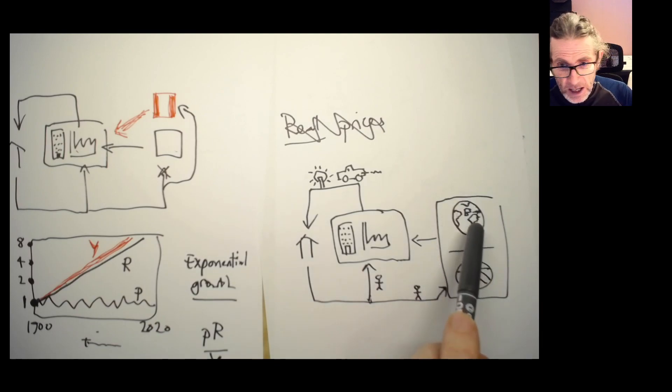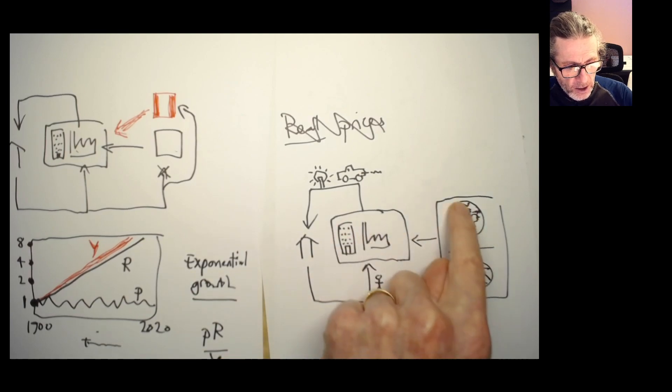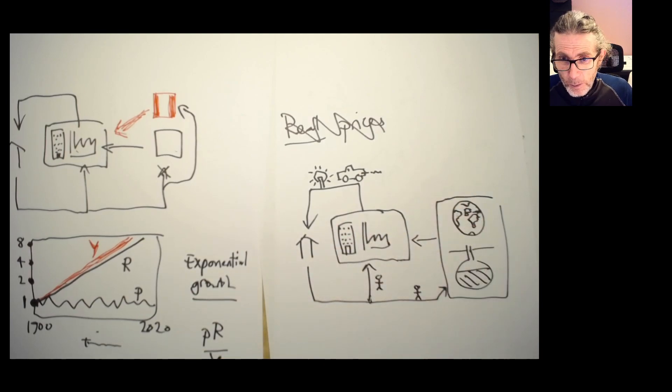So what happens instead? We've got a fixed quantity of land, and the price of land goes up. Because the more powerful our technology is, the more we can do with each bit of land, the more people are willing to pay for it. So that pushes the price up. And that's fine, the market will deal with that.